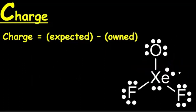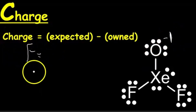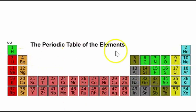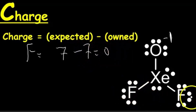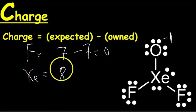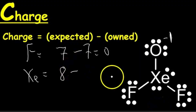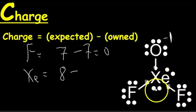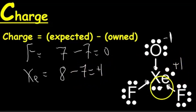For the xenon example: oxygen is minus one as calculated before. For fluorine, we expect seven electrons. Fluorine owns its six lone-pair electrons plus one from the bond — seven owned electrons total. So seven minus seven equals zero; the fluorines are not charged. For xenon, we expect eight electrons. Xenon owns one from each of its three bonds plus the four non-bonding electrons, giving seven owned. So eight minus seven equals one — the charge on xenon is plus one.